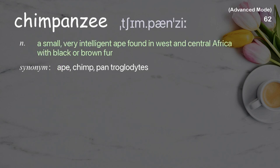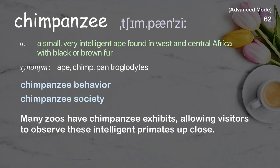Chimpanzee: a small, very intelligent ape found in West and Central Africa with black or brown fur. Examples: chimpanzee behavior, chimpanzee society. Many zoos have chimpanzee exhibits allowing visitors to observe these intelligent primates up close.